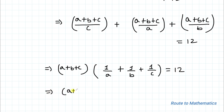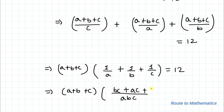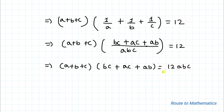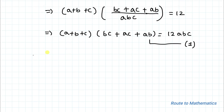Combining the fractions, we have (a+b+c) × (bc + ac + ab) / (abc) = 12. By cross multiplication, this gives us (a+b+c)(ab + bc + ca) = 12·abc. Let's call this equation 1.